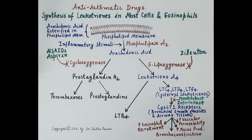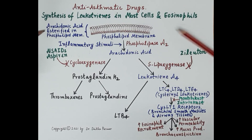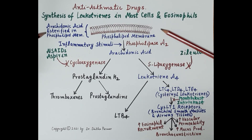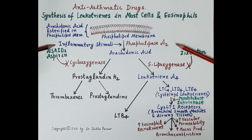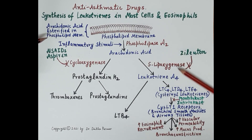Now let's study how leukotrienes are synthesized in mast cells and eosinophils. This diagram depicts the phospholipid membrane of mast cells and eosinophils. Arachidonic acid is esterified in the phospholipid membrane. Inflammatory stimuli like dust particles, fumes, and pollens activate phospholipase A2, which releases arachidonic acid from the phospholipid membrane.